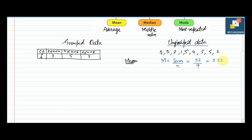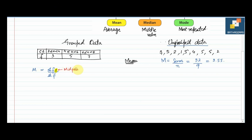For grouped data mean, the working formula is: summation of fx divided by summation of f. But here we don't have the value of x directly — x is the midpoint. So first we find midpoints: (2+4)/2 = 3, (4+6)/2 = 5, (6+8)/2 = 7. Now we have the midpoint values and can find fx.